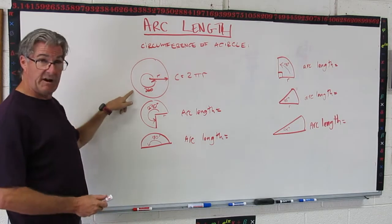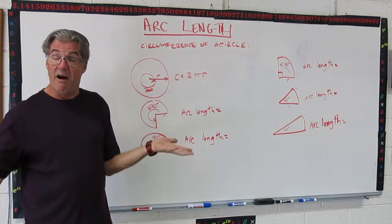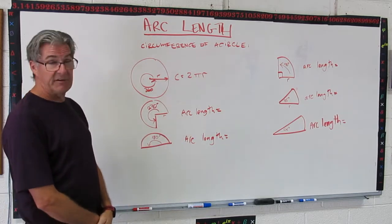So what we're going to do is start off with a basic circle like here. Circumference of a circle. Here's my diagram. I've got my radius here that goes all the way around. Circumference of a circle is 2πr. Makes sense. That's our formula.